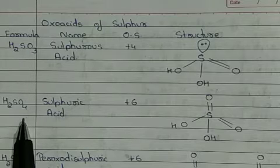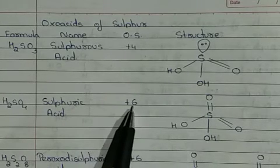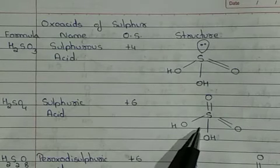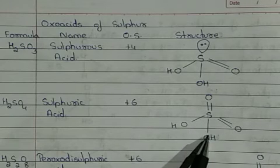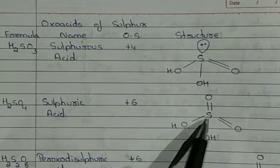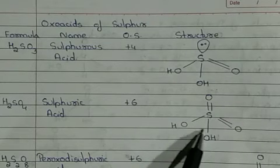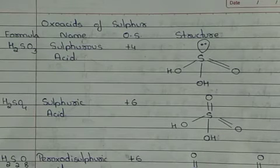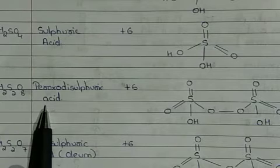The next oxo acid is sulfuric acid (H₂SO₄), a very commonly used acid where the central sulfur atom has an oxidation state of +6. Its geometry is tetrahedral, with two S–OH bonds and two S=O double bonds. The central sulfur atom has a total of six bonds, which is consistent with its oxidation state of +6.